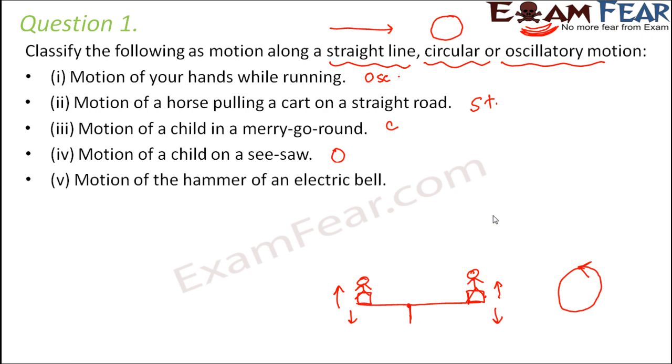Motion of the hammer of an electric bell. So in electric bell, whenever you push the bell, that hammer, it starts vibrating. So vibration is nothing but again, it is a type of oscillatory motion.